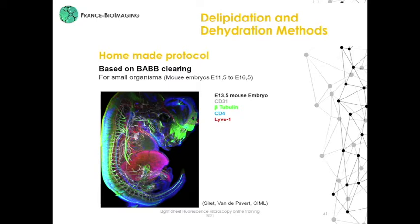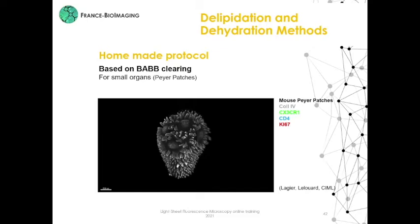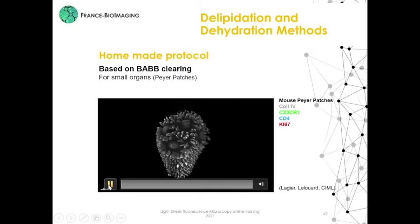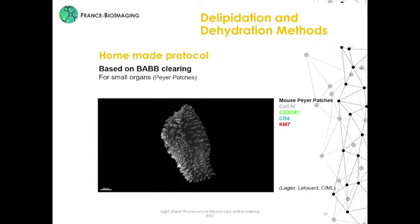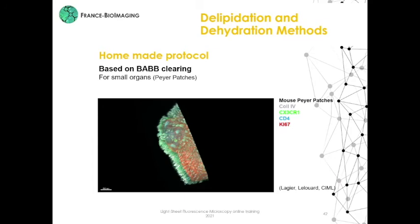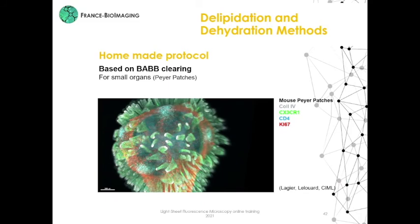This is a maximal projection of an embryo at E13.5, stained with an anti-CD31 for the blood vessels, beta-tubulin for the nerves, CD4 for T cells, and LYVE1 for the endothelial lymphatic cells. With this protocol, we also stain small organs like Peyer's patches. Here we have a video of mouse Peyer's patches stained with anti-collagen 4, anti-SDF1, anti-CD4, and anti-Ki67.